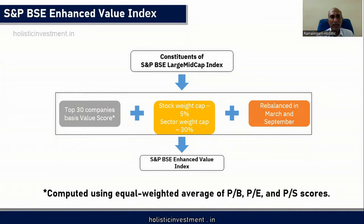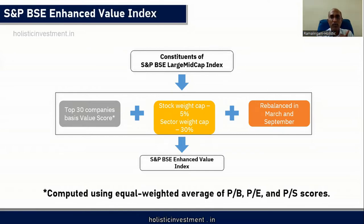This particular index is constructed by selecting the top 30 stocks from the S&P BSE Large Mid-Cap Index. They choose the top 30 stocks using value investment philosophy-based scores — specifically three observable data points: P/B ratio, P/E ratio, and P/S ratio. Based on these three ratios, they pick and choose the top 30 companies, which are then constructed as the S&P BSE Enhanced Value Index.